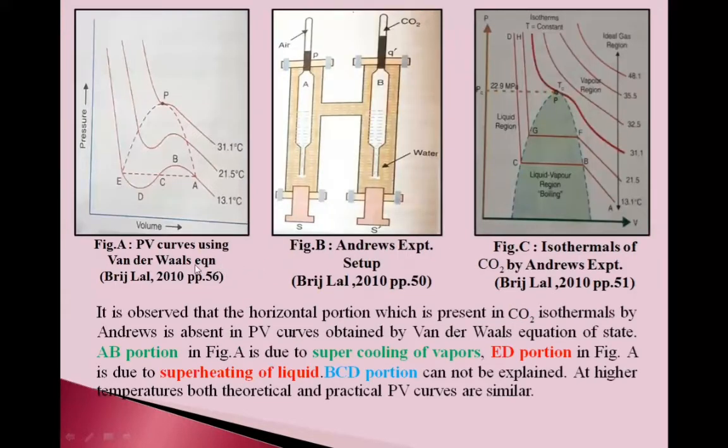Figure A shows PV curves using Van der Waals equation - these are theoretical curves. And Figure C shows isotherms of CO2 by Andrews' experiment - these are practical curves. The middle Figure B shows Andrews' experimental setup.